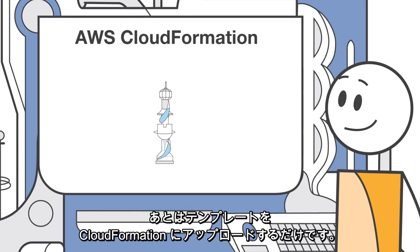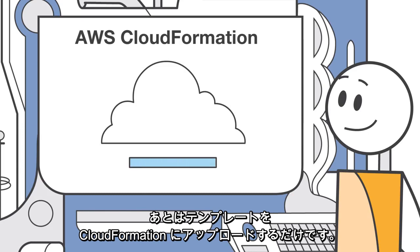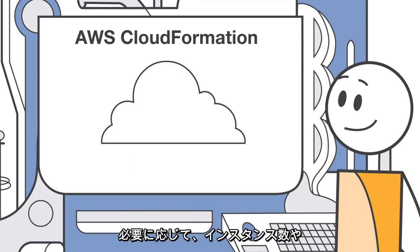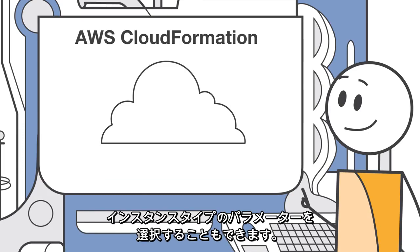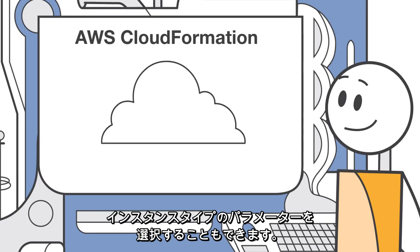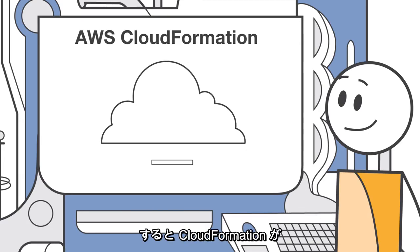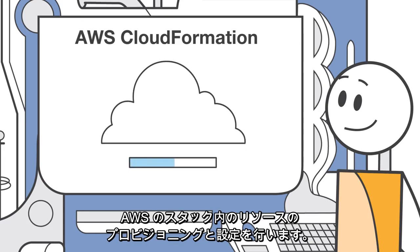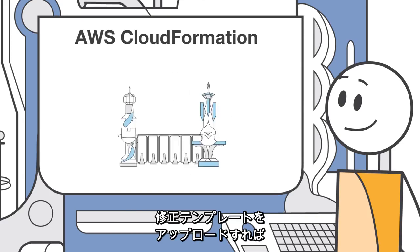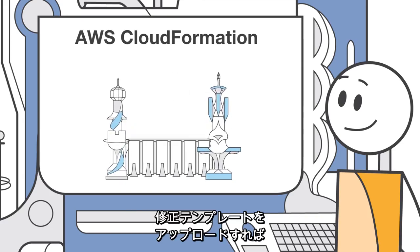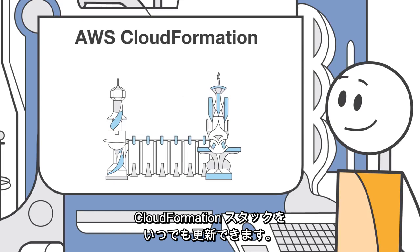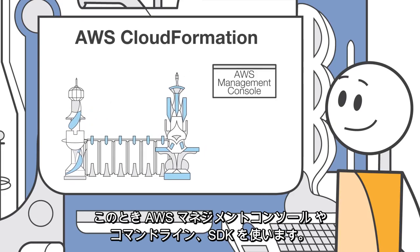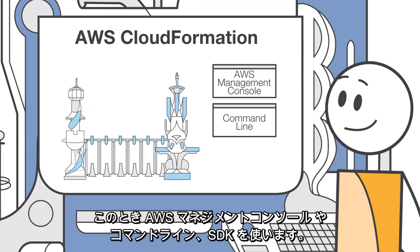Next, you just upload your template to CloudFormation. You can also select parameters such as the number of instances or instance type if necessary. Then CloudFormation will provision and configure your AWS resource stack. You can update your CloudFormation stack at any time by uploading a modified template through the AWS Management Console, Command Line, or SDK.